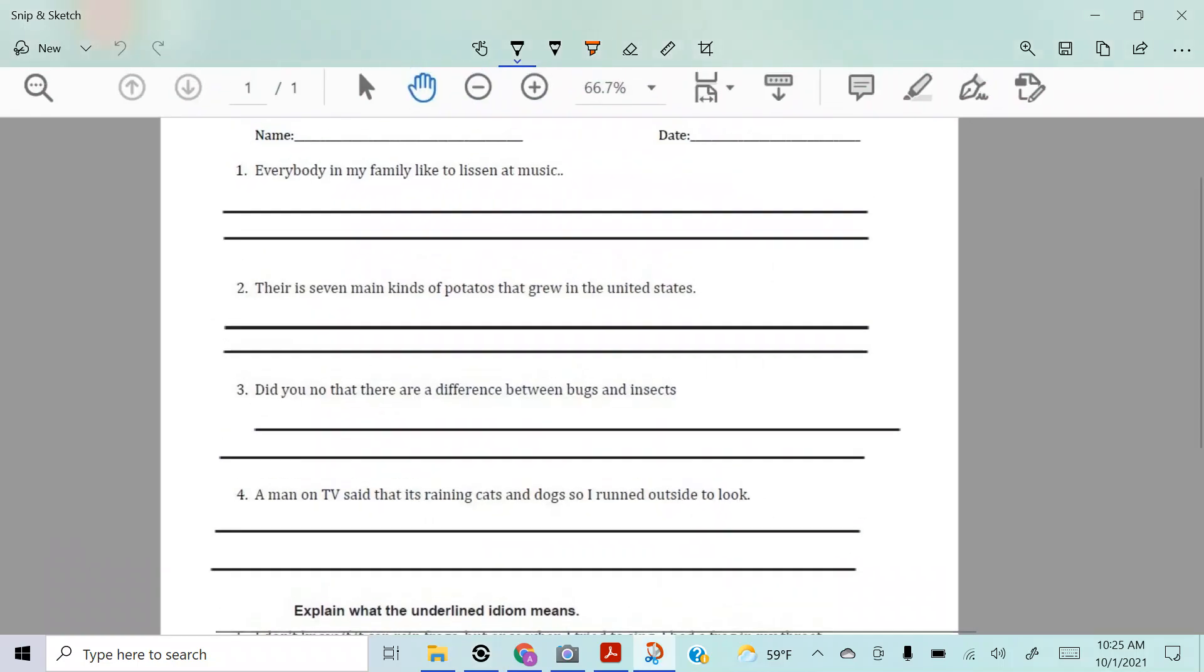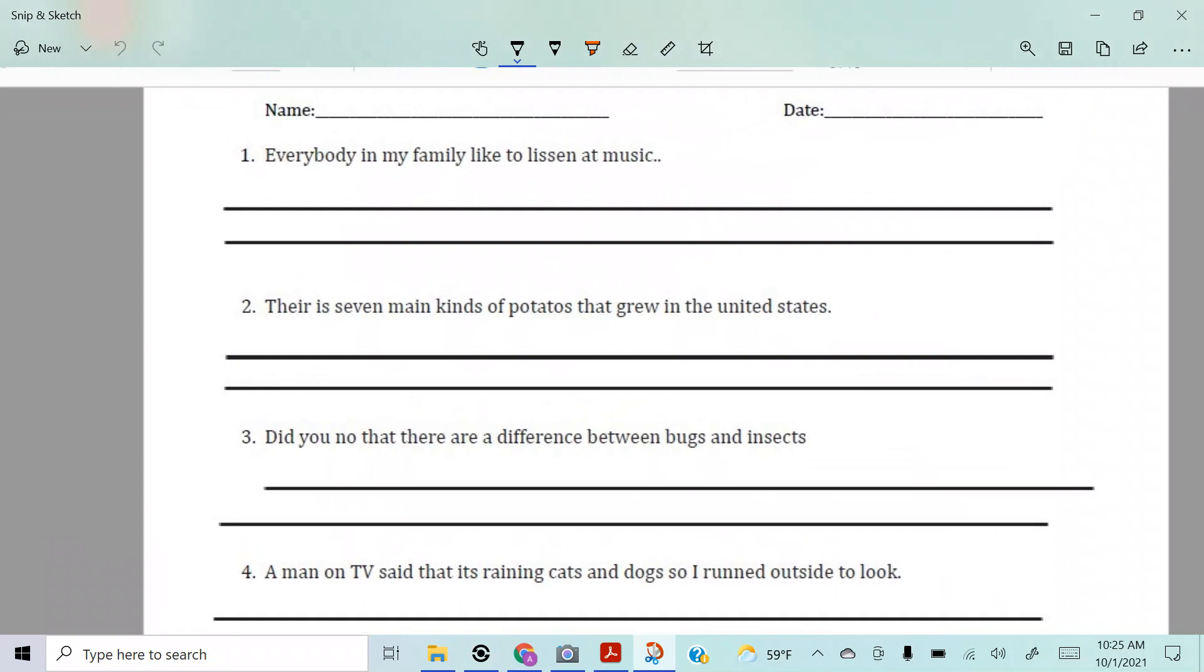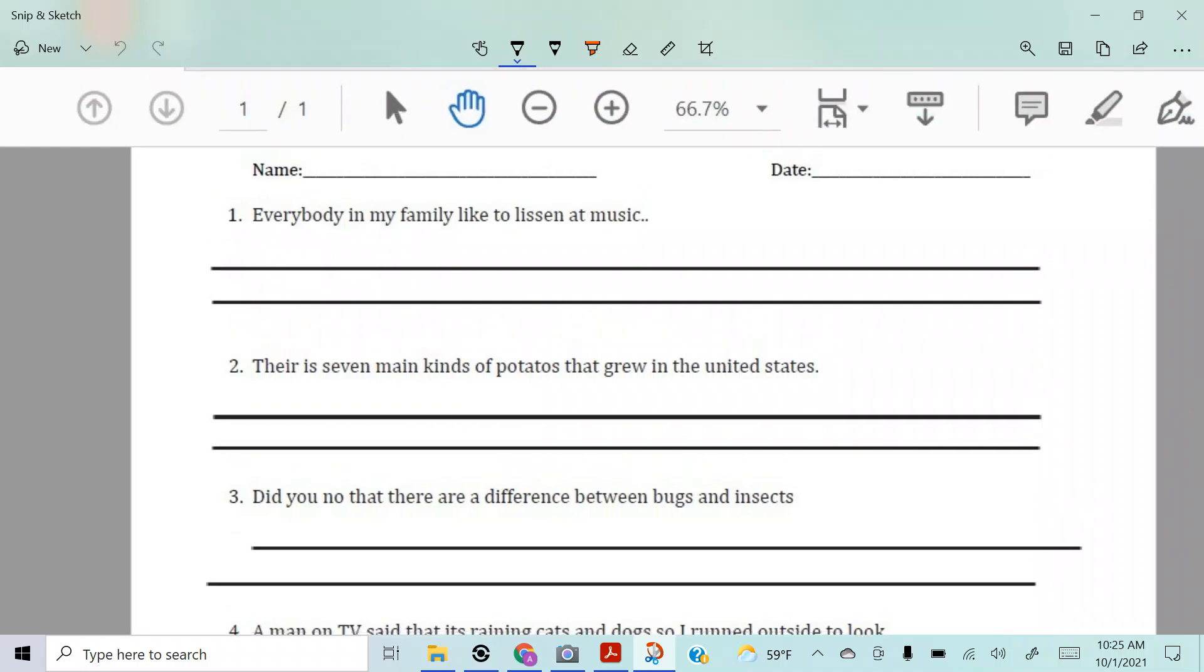All right guys, we're getting ready to do our DLR grader for week 5. You guys by now know how to do this. Here's what I want you to make sure: when you grade your paper or if you've got someone else's paper, I want you to make sure that their name and date are up there and it's 10-1-21. That's important. All right, so without any further ado, let's get right to it.